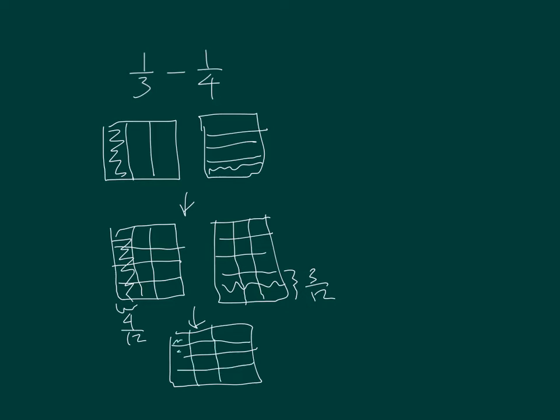So, I had 4 twelfths. I'm taking away 3 of those twelfths, which leaves me with 1 twelfth. So, my equivalent fractions that I had was 1 third is equal to 4 twelfths, 1 fourth equals 3 twelfths, and then I subtracted those to get 1 twelfth.